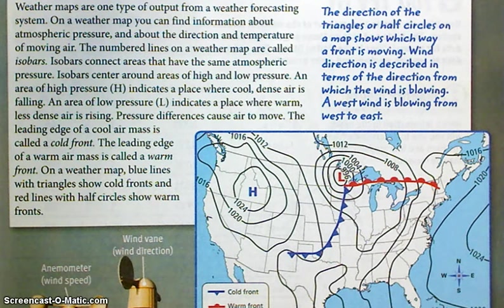An area of high pressure, with the H, indicates a place where cool, dense air is falling. An area of low pressure, L, indicates a place where warm, less dense air is rising. And pressure differences cause air to move.